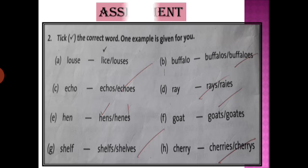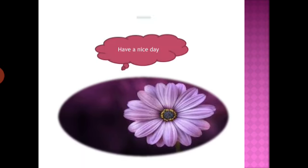Now this is your assignment. The first question was already given in the first part of this lesson. Tick the correct word — one example is given. See example number one: louse — L-O-U-S-E. You have two options; you have to tick the correct answer. The plural form of louse is lice, so the correct answer is lice. Write down all the questions in your notebook and tick the correct answer. I hope you all have understood this concept and topic. Thank you. Bye-bye, have a nice day.